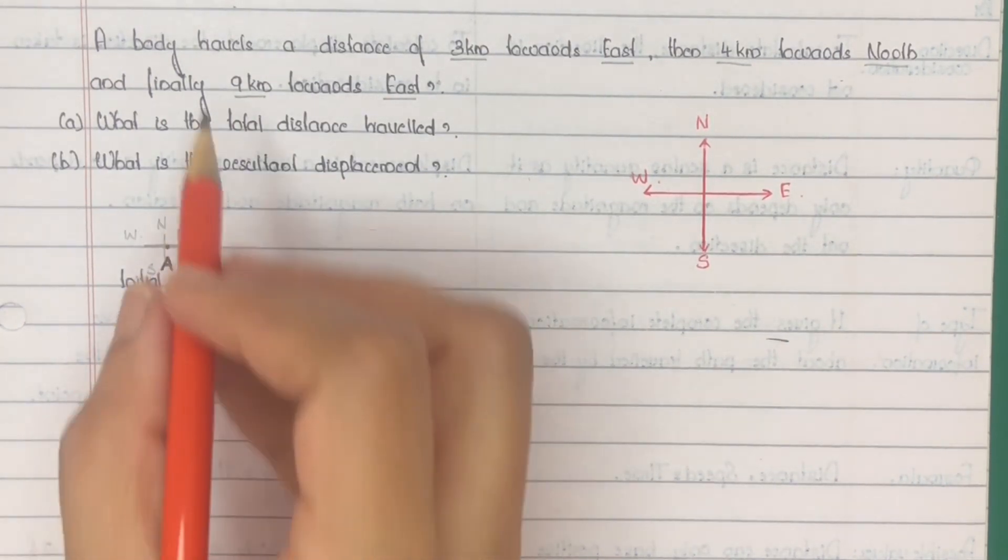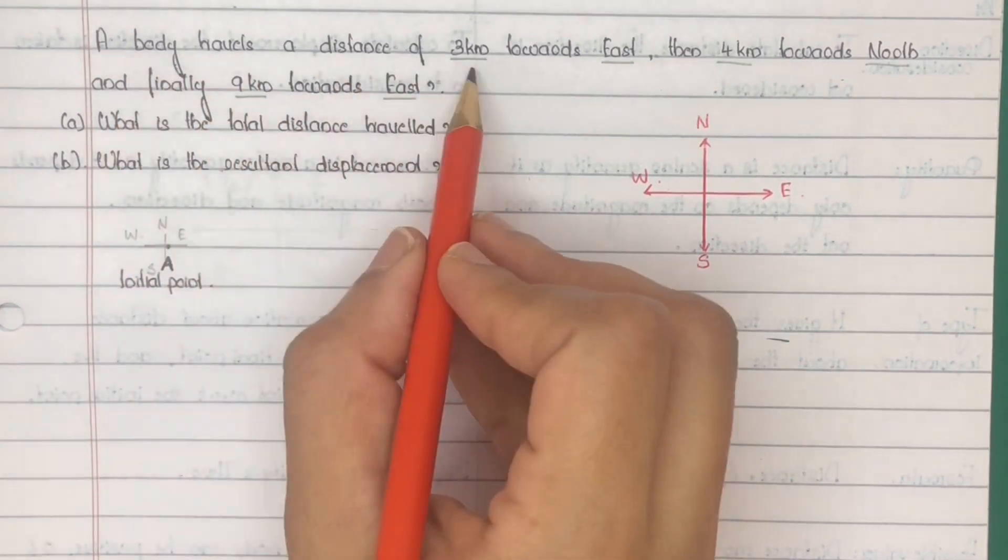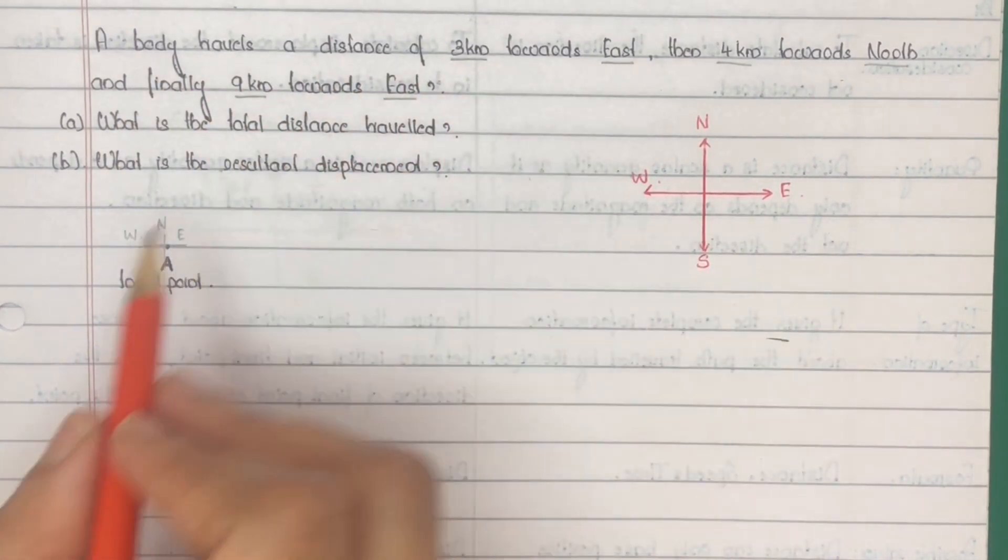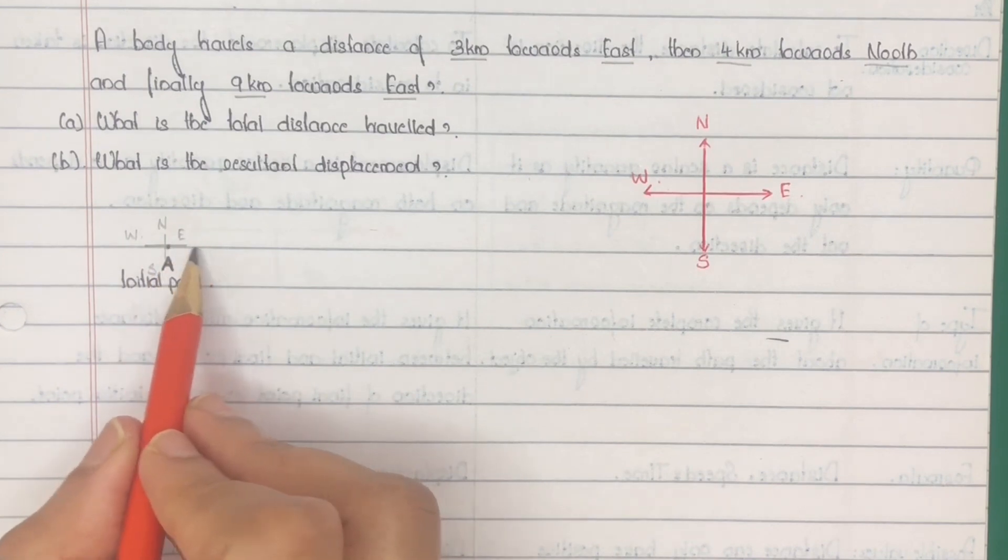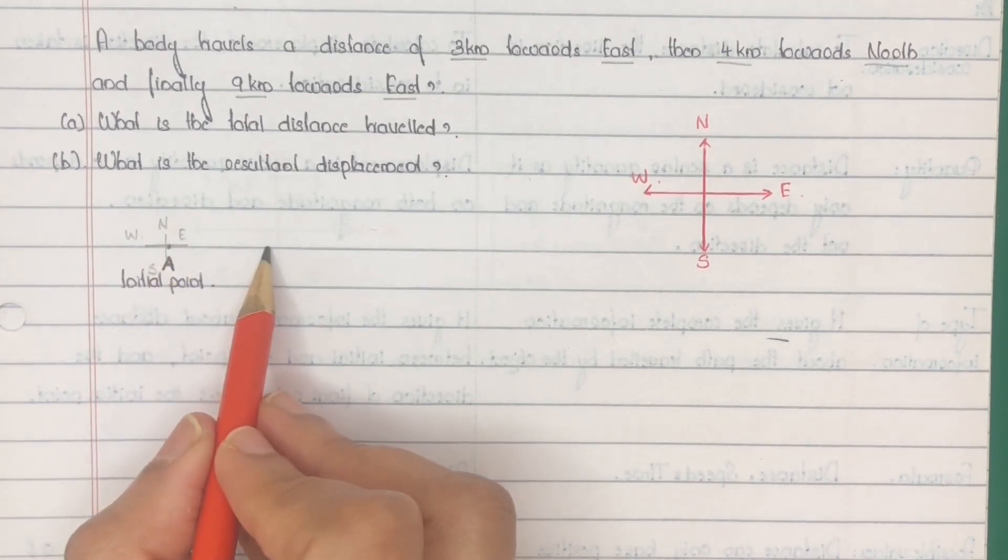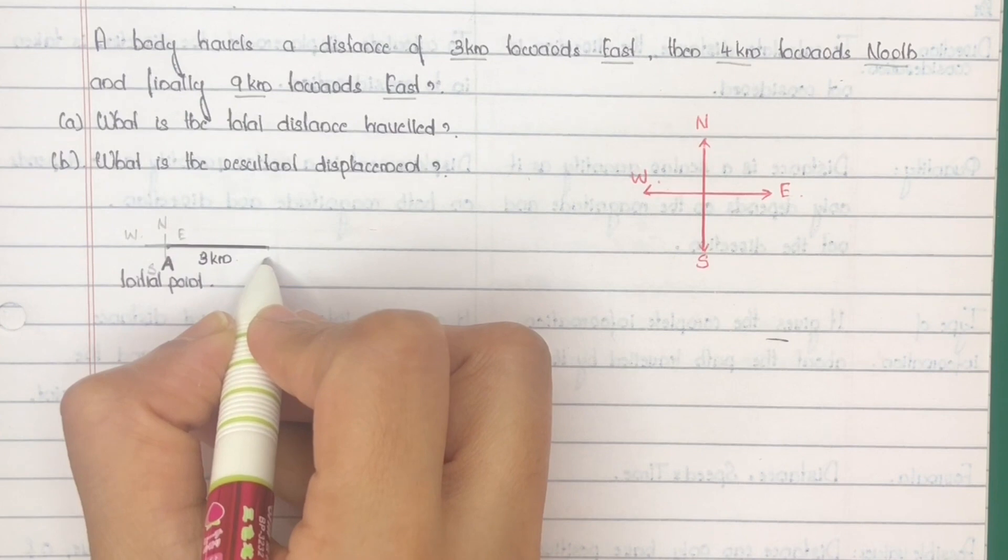Mark rough direction at point A. Next, the body travels a distance of 3 km towards east. East means towards the right side, 3 km towards the right side. Now the body reached at point B.